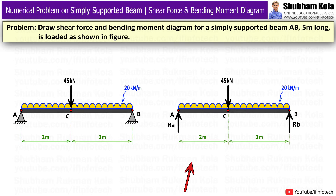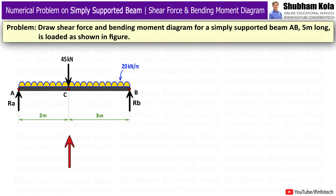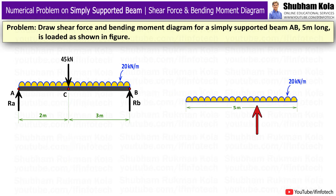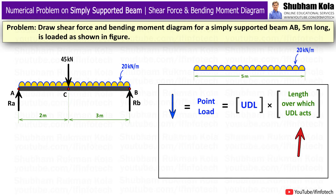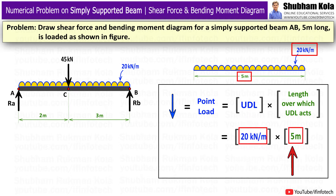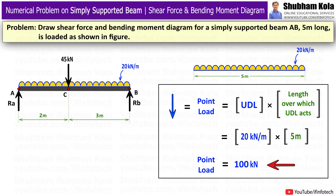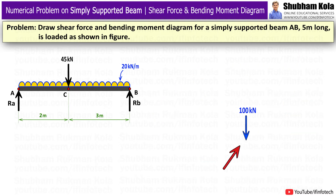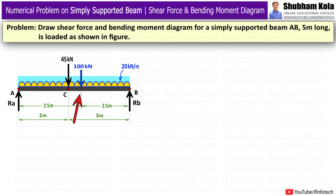First, I will draw the free body diagram for this beam section. To solve this numerical problem, we first have to convert the uniformly distributed load into a point load. I will multiply the UDL value by the length over which it acts, giving a converted point load of 100kN. This converted point load acts at the midpoint of the length over which the UDL acts.